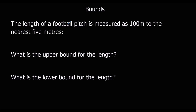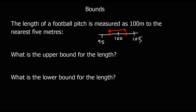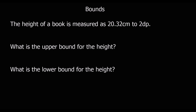The length of a football pitch is measured as 100 meters to the nearest five meters. The next one up is 105 and the next one down is 95. We know it's between halfway here and halfway there, so the upper bound is 102.5 meters and the lower bound is 97.5 meters.